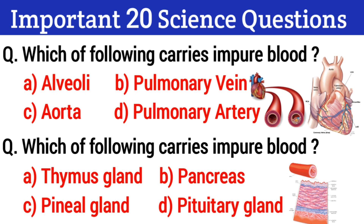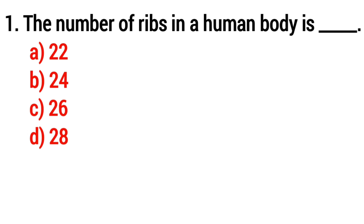Question 1: The number of ribs in the human body. Option A: 22, Option B: 24, Option C: 26, Option D: 28. The correct answer is Option B: 24.